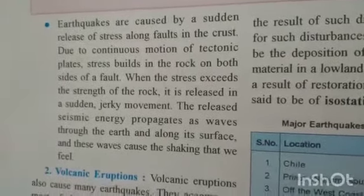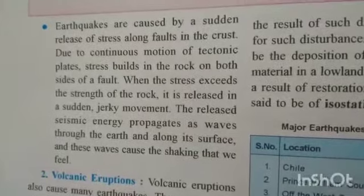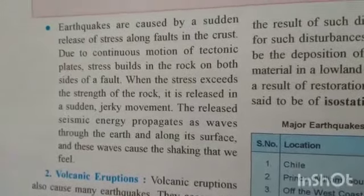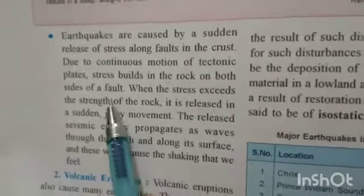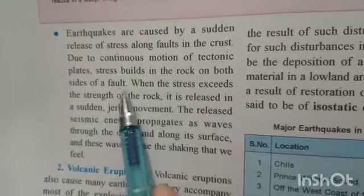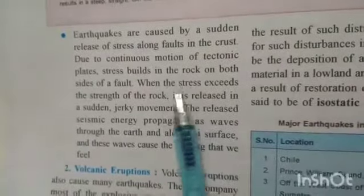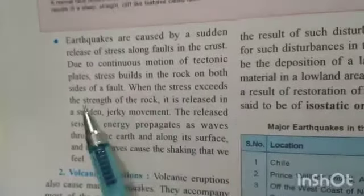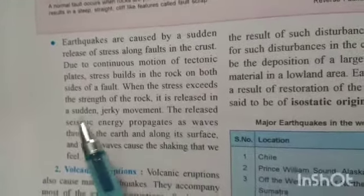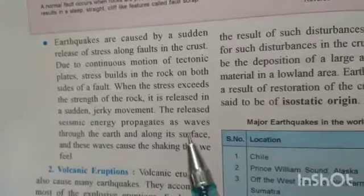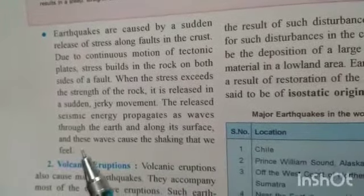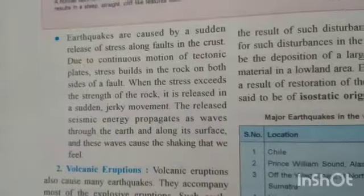Stress builds in the rock on both sides of a fault — a fault being a fracture or weak zone. When the stress exceeds the strength of the rock, it is released in a sudden jerky movement. The released seismic energy propagates as waves through the earth and along its surface, and these waves cause the shaking that we feel as an earthquake.